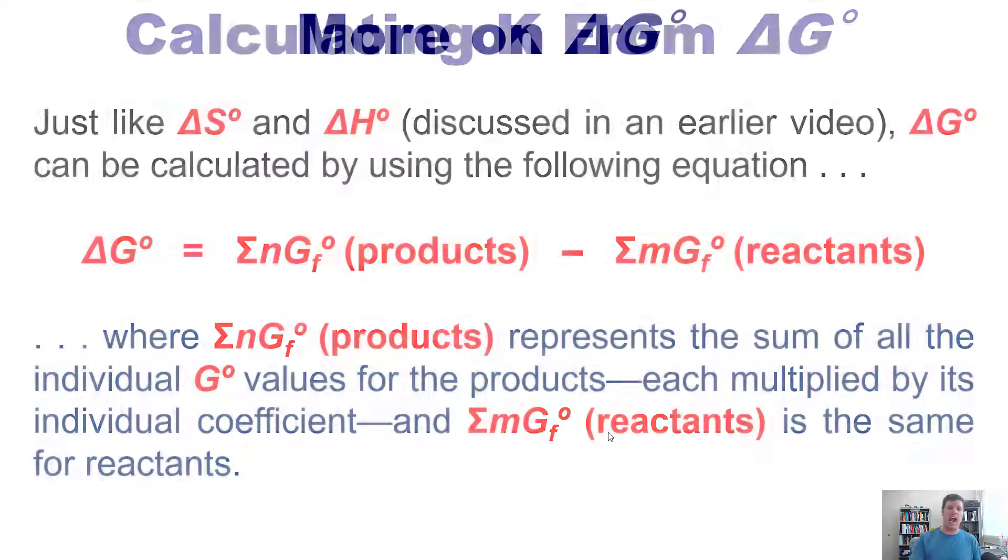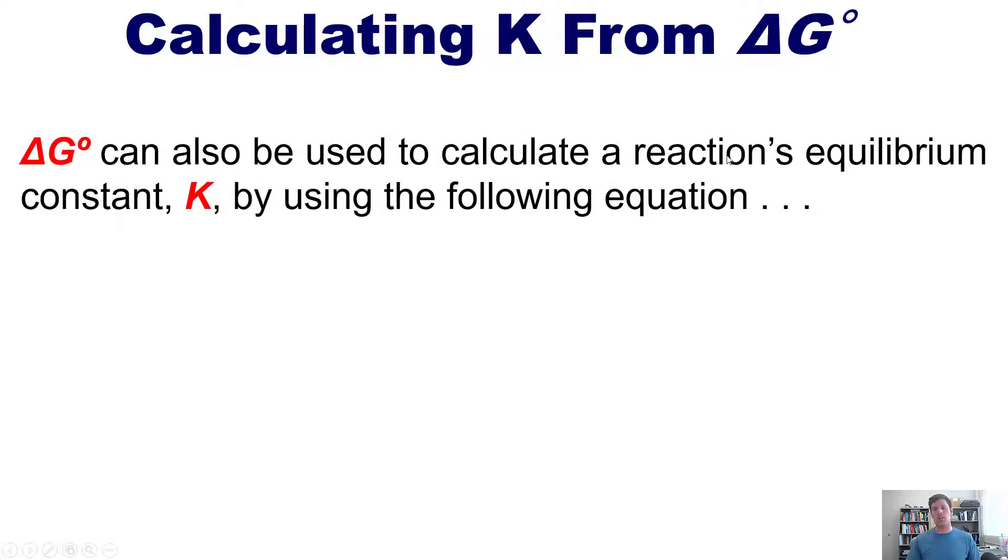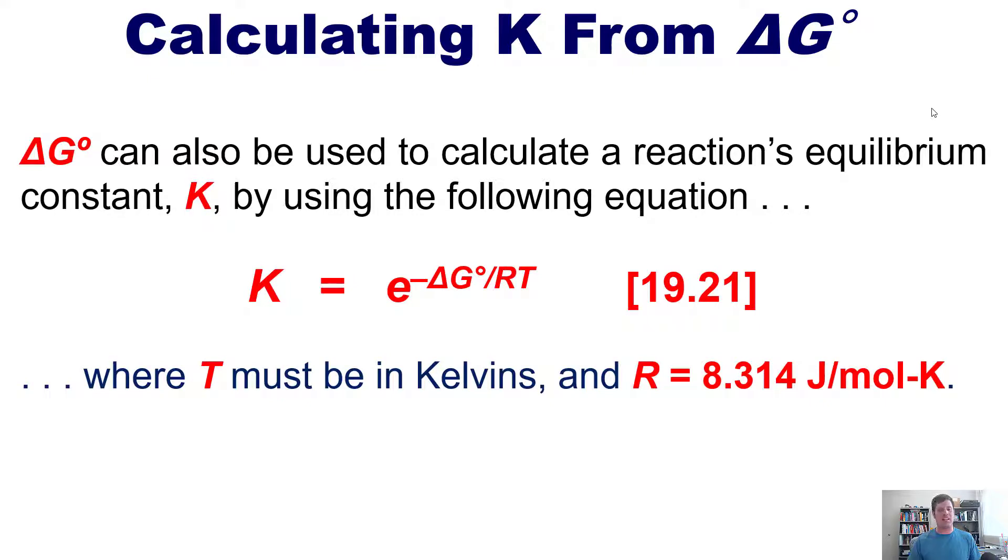That takes us to our final topic, how in the world you calculate K or the equilibrium constant from delta G. Now, as it turns out, delta G can also be used to calculate a reactant's equilibrium constant K by using the equation shown here, which I will not make my university students memorize. And where T must be in Kelvins and R, the ideal gas constant in terms of energy, is this value right here.